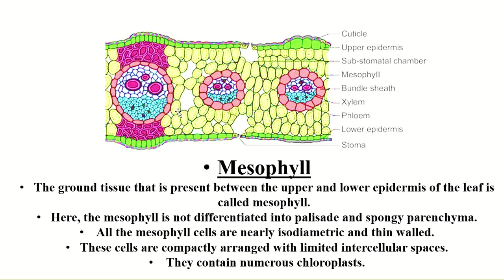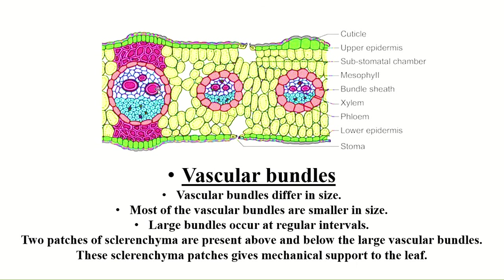The mesophyll cells also contain numerous chloroplasts; as mentioned, chloroplasts are responsible for photosynthesis. The vascular bundles are different in size — here you can find three vascular bundles of different sizes. The larger bundles are present at regular rectangular intervals. Two patches of sclerenchyma are present above and below each larger vascular bundle, giving it mechanical support. In the picture, the pink-colored cells represent the sclerenchyma cells — sclerenchyma cells are dead cells.